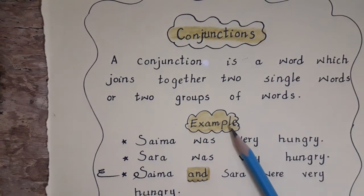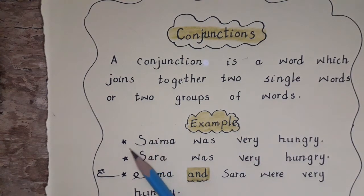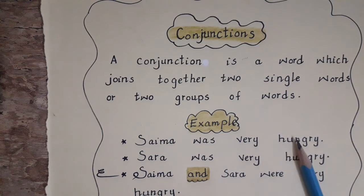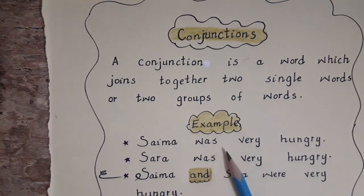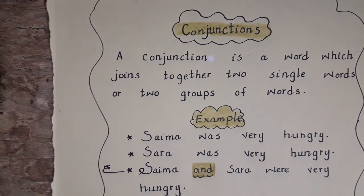Let's see the example of conjunctions. Look at this example students: Saima was very hungry and Sara was very hungry. So students, in this example you can see that we can link these sentences by saying that Saima and Sara were very hungry.